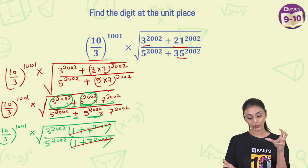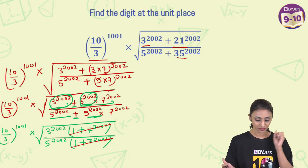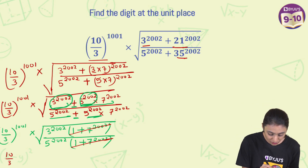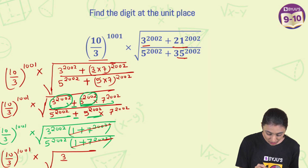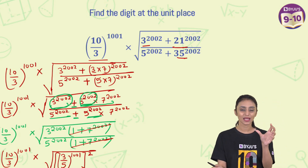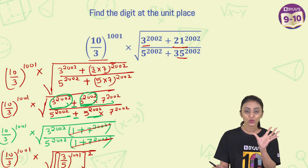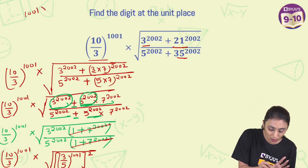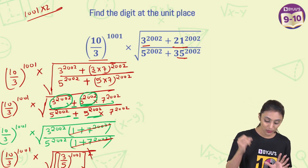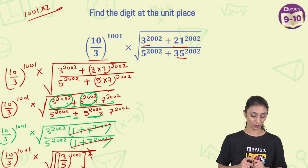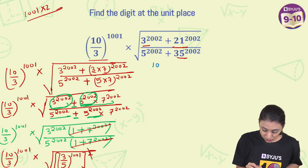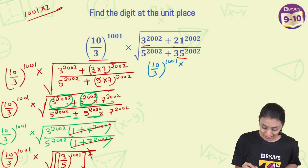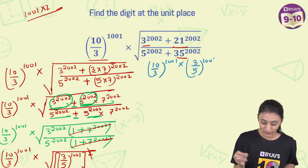Now we are left with the square root of (3 to the power 2002) upon (5 to the power 2002). Can I write it as: (10/3) to the power 1001 times the square root of (3/5) to the power 2002? Yes, because 2002 can be written as 1001 times 2, so the square root and the square cancel out, leaving us with (3/5) to the power 1001.